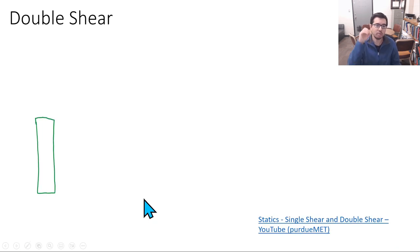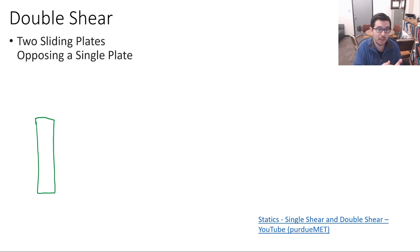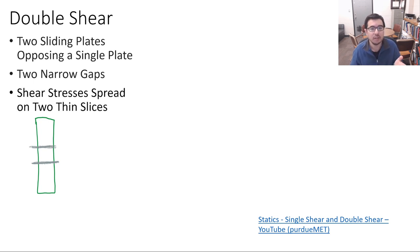So those are the scenarios for single shear. Let's talk about double shear now. Double shear, as you might think, is kind of like twice as many surfaces as you would have in single shear. Here we have two sliding plates opposing the single plate, and we have two narrow gaps. Here are the narrow gaps, these are the two plates opposing this single plate over here. And the shear stresses are spread on two thin slices.